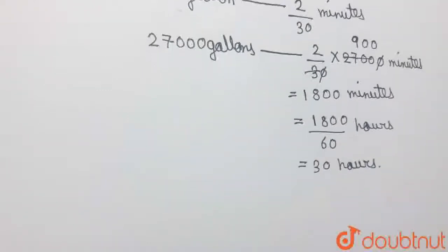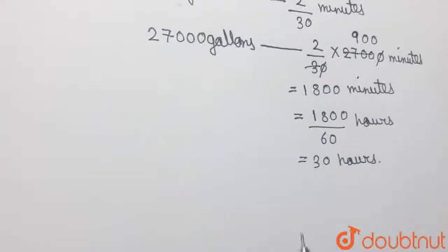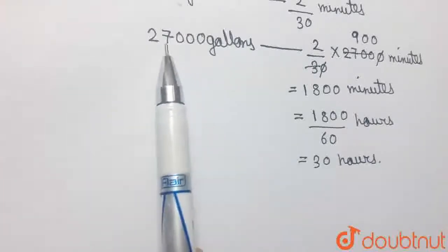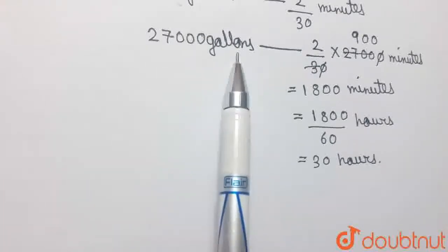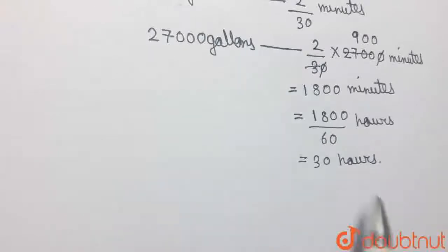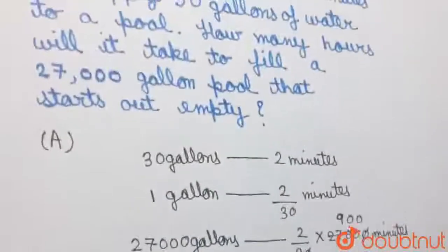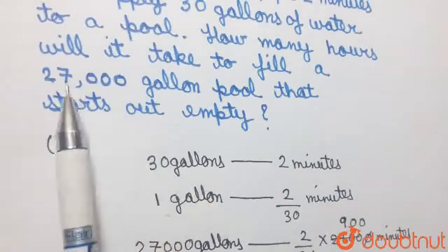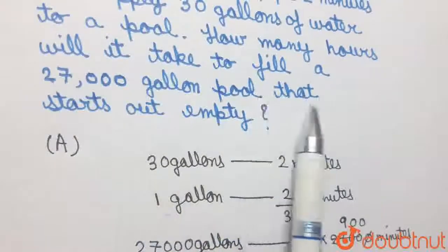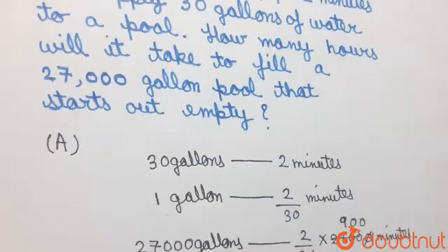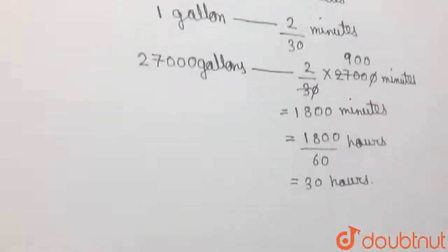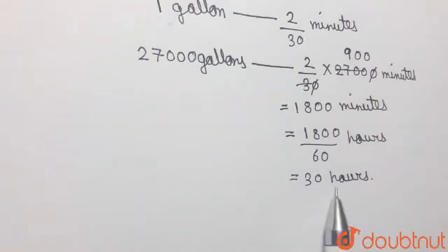Hence, we have concluded that to supply a volume of 27,000 gallons of water, the time that the inlet pipe will take is 30 hours. In order to fill a 27,000-gallon pool that starts out empty, the time taken by the inlet pipe will be 30 hours. The correct answer is 30 hours.